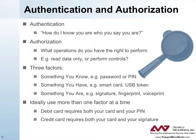Authentication verifies that you are who you say you are. Authorization relates to which operations you have the right to perform — for example, are you permitted to only read data, or are you permitted to send controls as well? There are three factors: something you know, such as a password or PIN; something you have, such as a smart card or USB token; or something unique to you, such as a signature, a fingerprint, or a voice print.